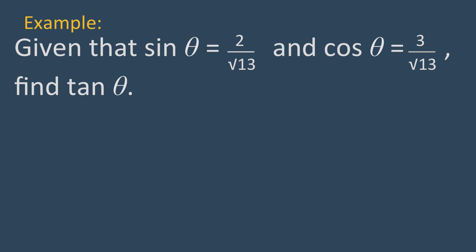Here is an example. Given that sine theta equals 2 divided by root 13, and cosine theta equals 3 divided by root 13, find tan theta. Tan theta equals sine theta divided by cosine theta. We substitute the given values and simplify to find that tan theta equals 2 over 3.